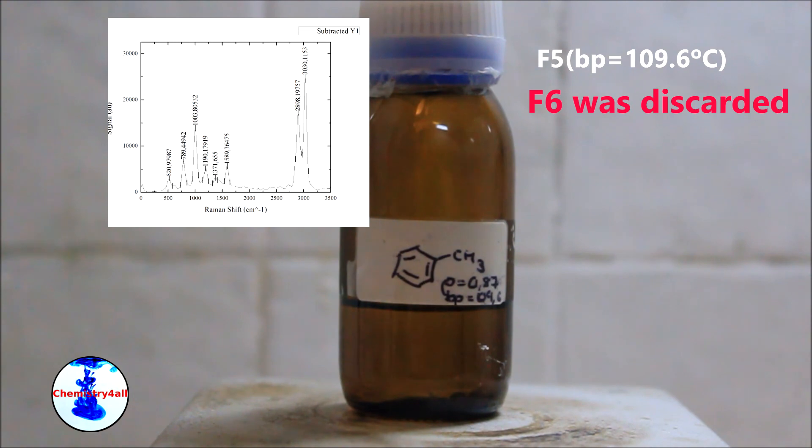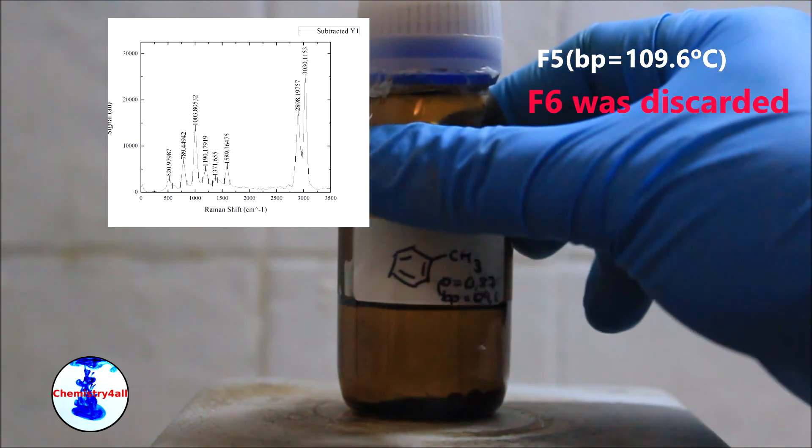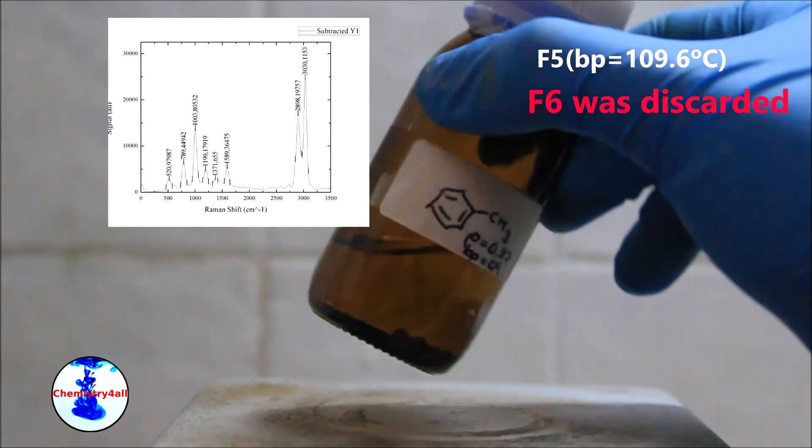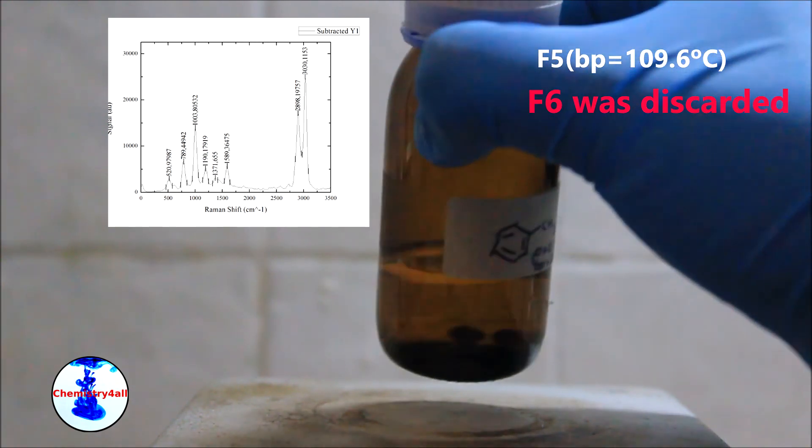Finally we have obtained 30 mL of pure toluene out from 50 mL of paint remover. The final amount will vary depending on the composition of the paint remover used.